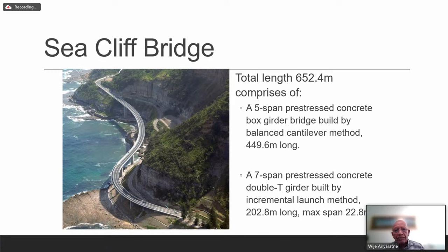I was privileged to sign off and approve this design. To arrive at this design we went through seven options. The final option consists of five spans of prestressed concrete box girders built by the balanced cantilever method — 449.6 meters long — and seven spans of prestressed concrete double-T's built by incremental launch, like a train being pushed. Because of the bridge's curvature, various options were evaluated before this one was selected. It won many awards.